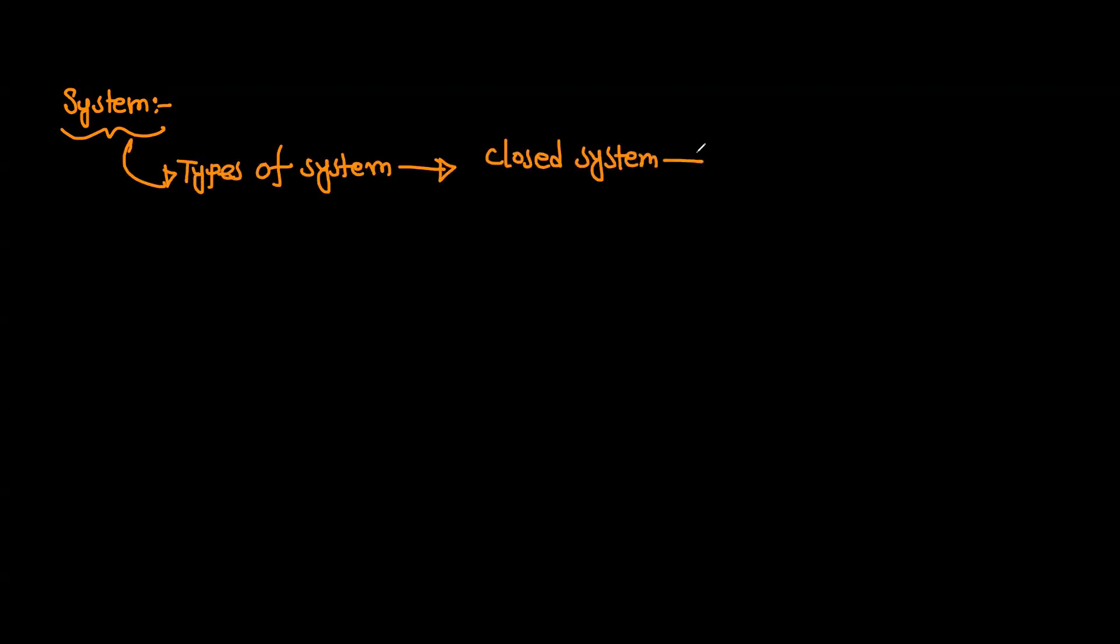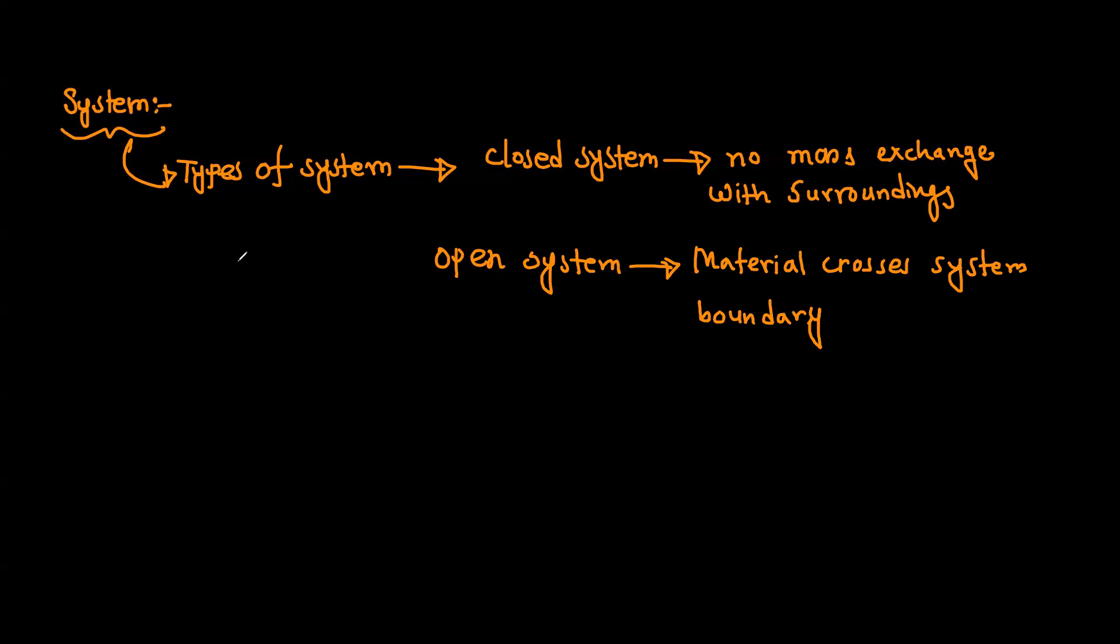There are two types of systems: closed system - no mass exchange with surroundings, and open system - material crosses the system boundary. Surroundings are anything outside the system boundary.